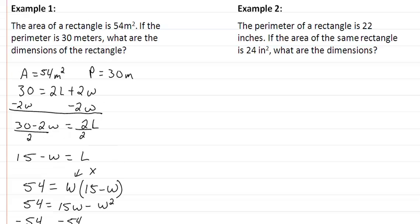Okay, let's look at our second one. We're given that the area of this rectangle is 24 inches squared and that the perimeter is 22 inches.